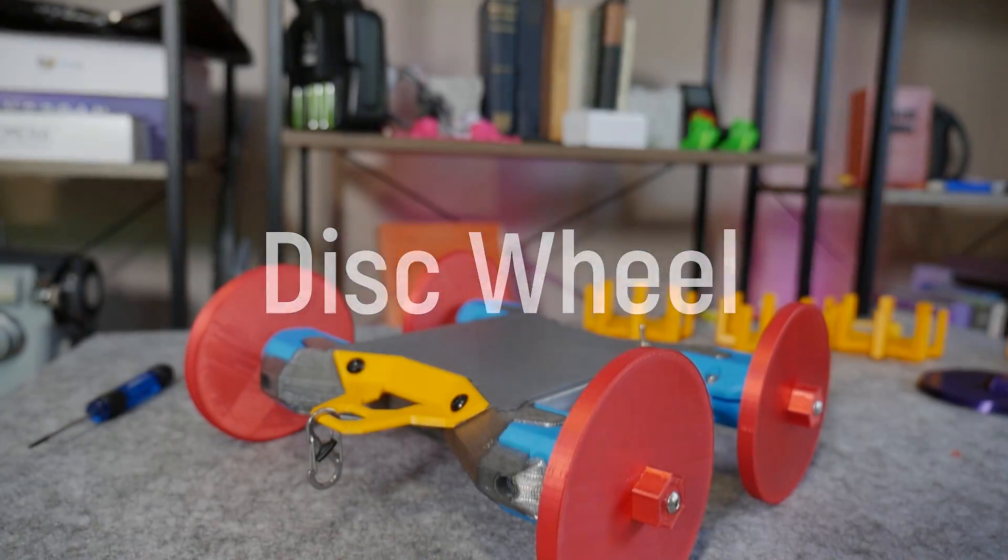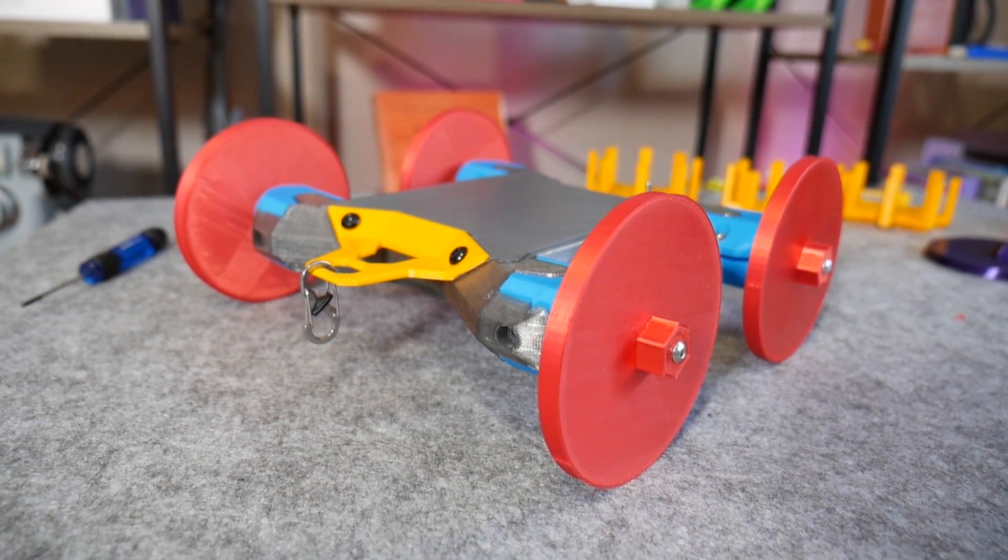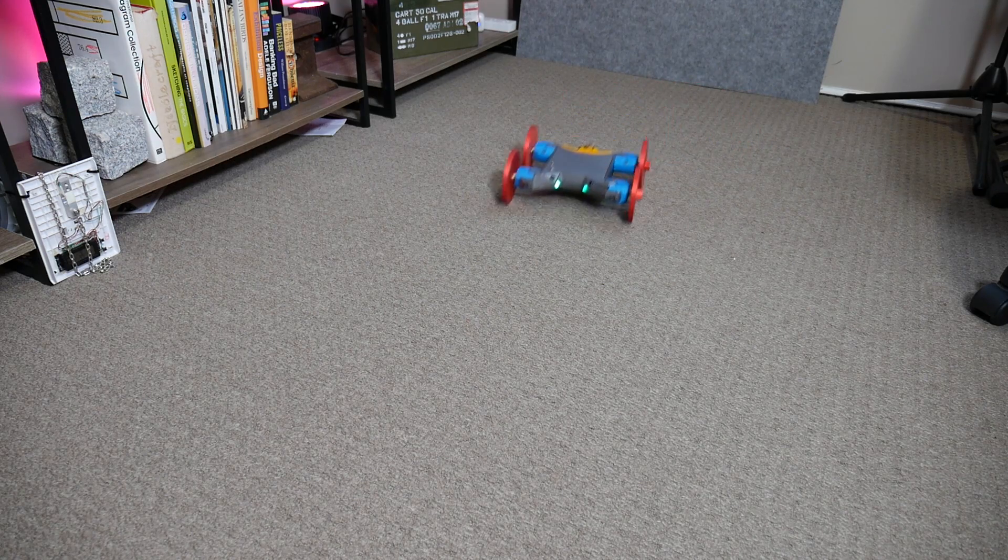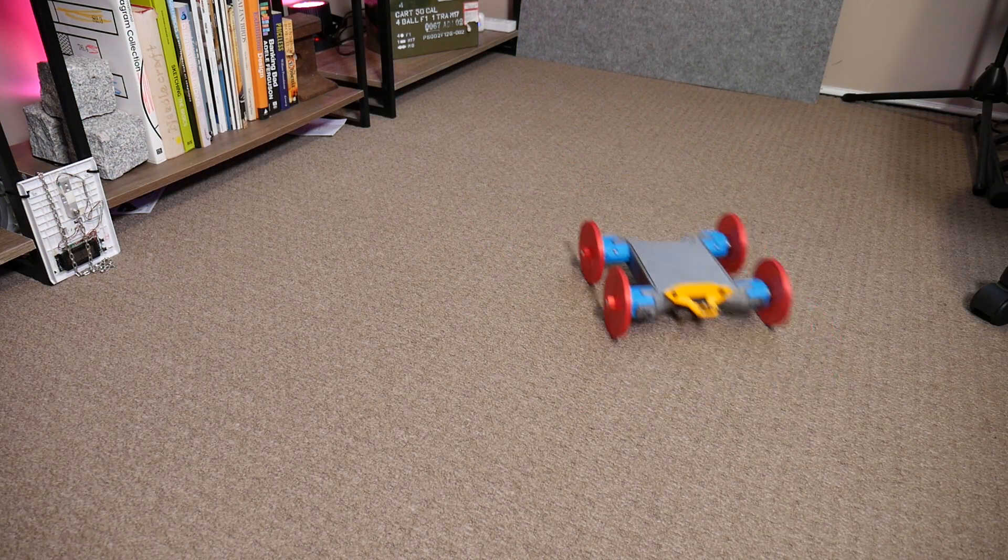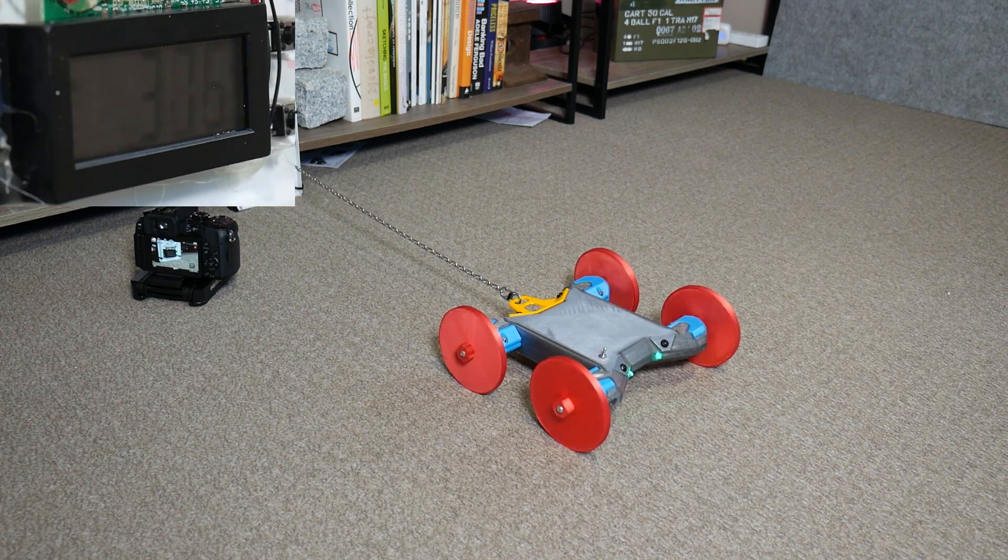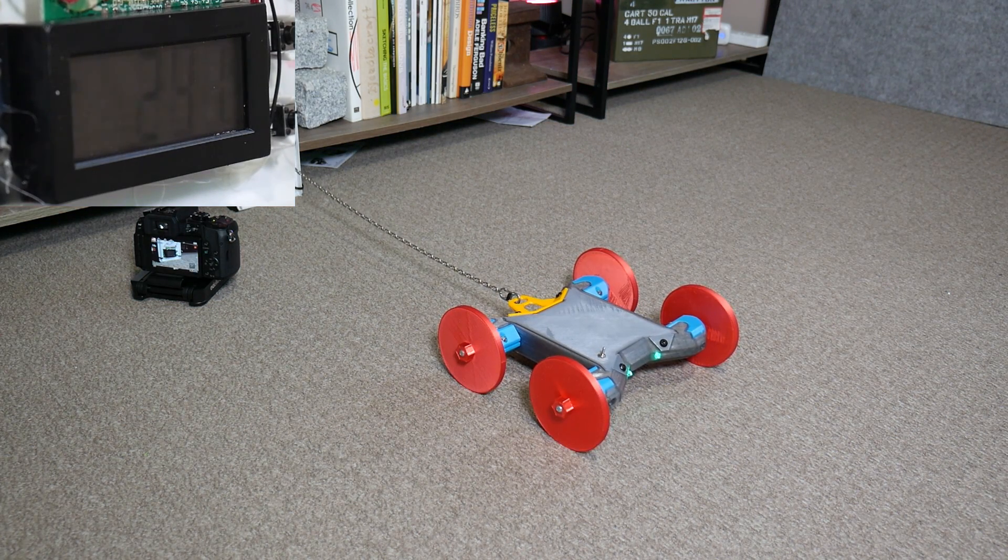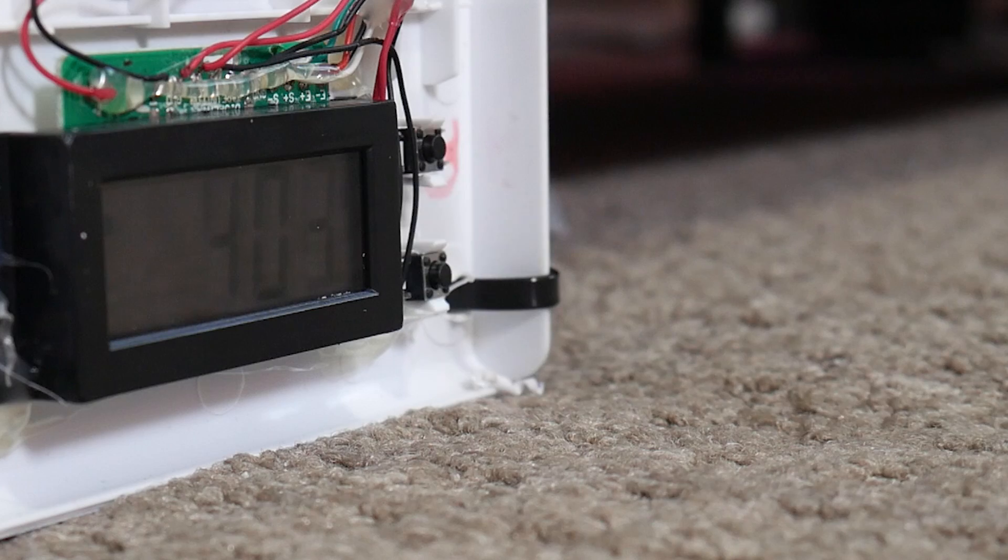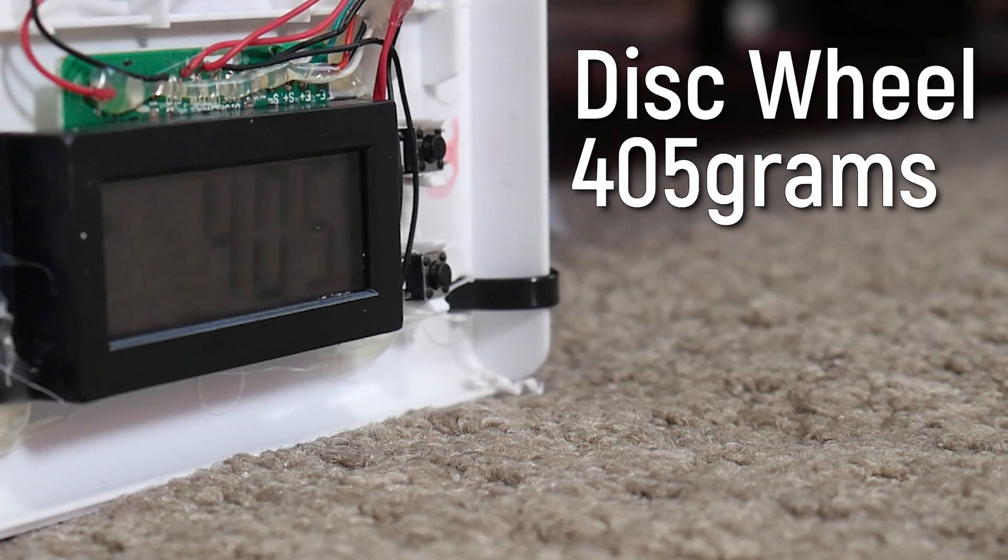First up the disc wheels. These are 8mm thick and just straight smooth plastic and are actually quite controllable in general but as you might expect have almost no pulling power whatsoever. They just sit and do burnouts all day. The force was quite uniform however and measured out at about 405 grams.